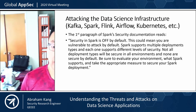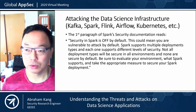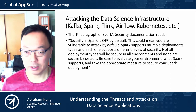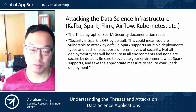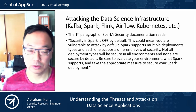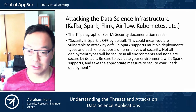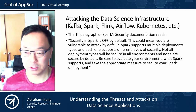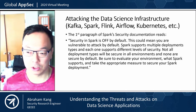When we look at attacking the data science infrastructure, you think about all of these different tools — Kafka, Spark, Flink, Airflow, Kubernetes. Spark is probably one of the most popular data science tools out there. In their security documentation, literally the first paragraph says: "Security in Spark is off by default. This could mean you are vulnerable to attack by default. Spark supports multiple deployment types, and each one supports different levels of security. Not all deployment types will be secure in all environments, and none are secure by default. Be sure to evaluate your environment, what Spark supports, and take the appropriate measures to secure your Spark deployment."